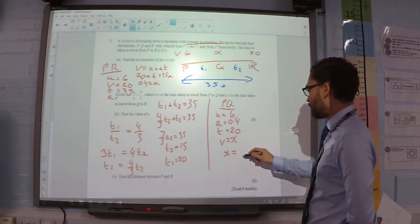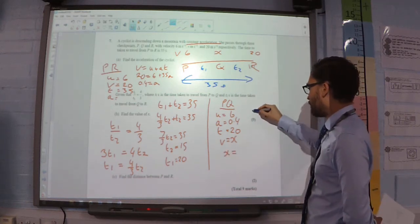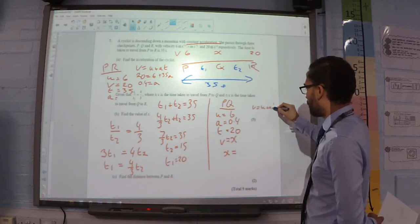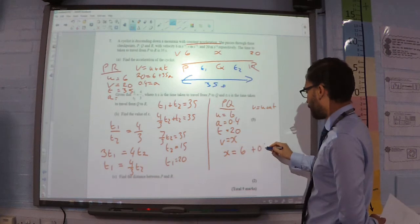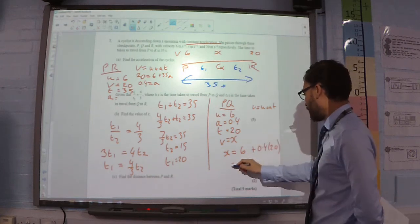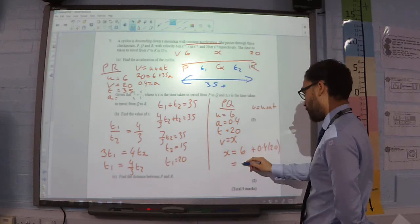So, X equals 6 plus 0.4 times by 20. And, that would be 14.